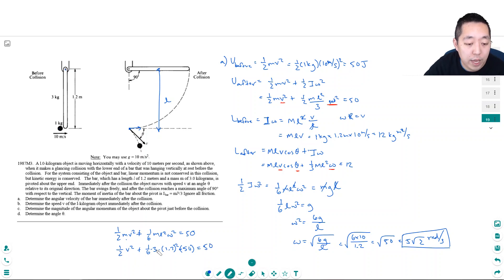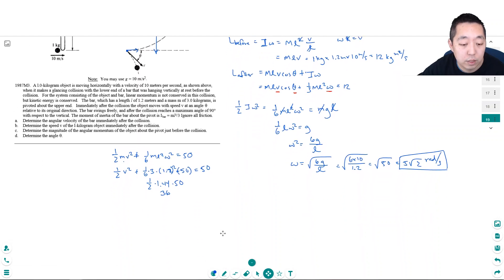This is 1.2 squared is 1.44. So this is one half times 1.44 times 50. 7.2 times 5, 35, 36. So this is all 36. So then, I have one half V squared plus 36 is equal to 50. Subtract that I get 14. So V squared is equal to 28. Because this is 14, then times 2 is V squared. So V is equal to the square root of 28 meters per second. And that's 2 root 7.